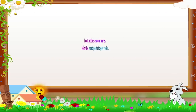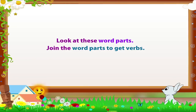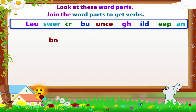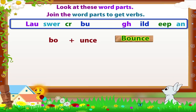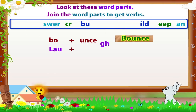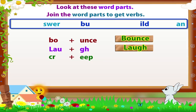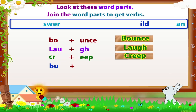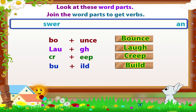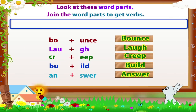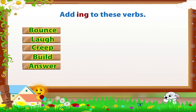Now let's have some fun! Look at these word parts. Join the word parts to get verbs — the first one is done for you. Now add -ing to these verbs.